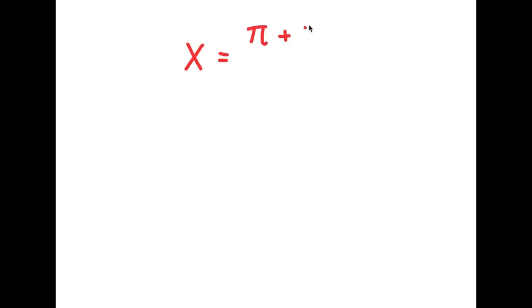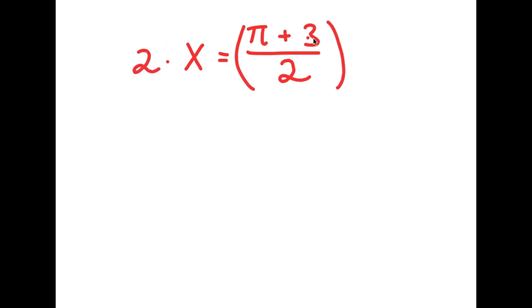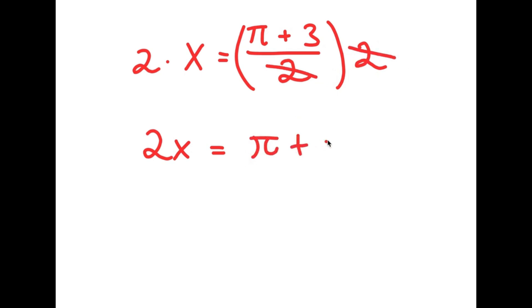I'm going to start with the statement x is equal to pi plus 3 over 2. All I'm doing is giving a value to a variable, which is completely legal. Now I'm going to multiply both sides by 2. I get 2 times x is equal to (pi plus 3 over 2) times 2. The two twos cancel out, so I get 2x is equal to pi plus 3.